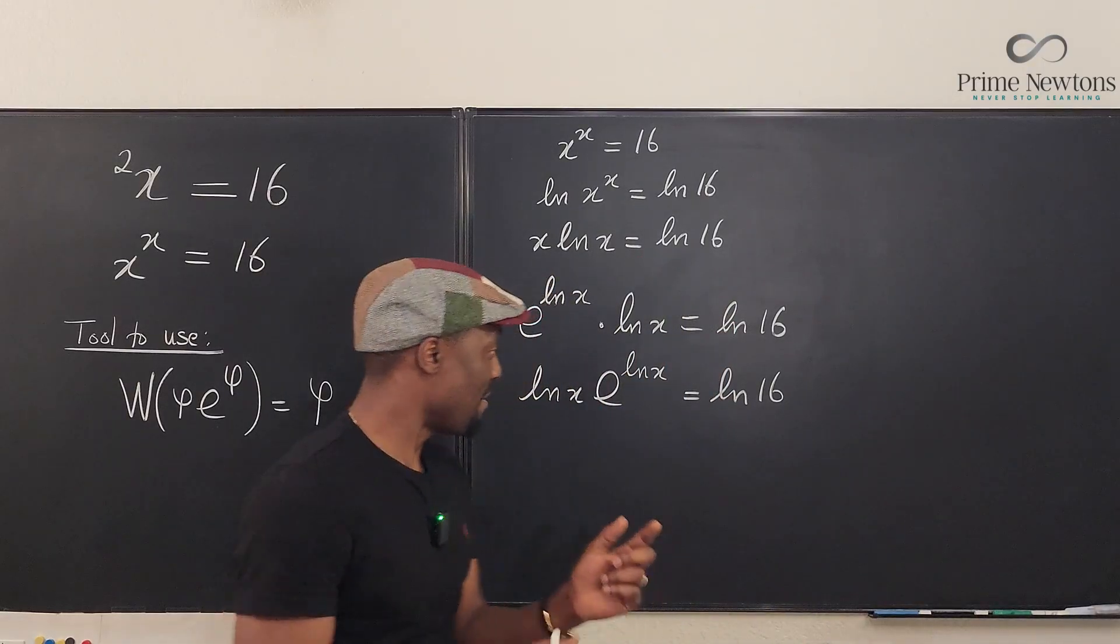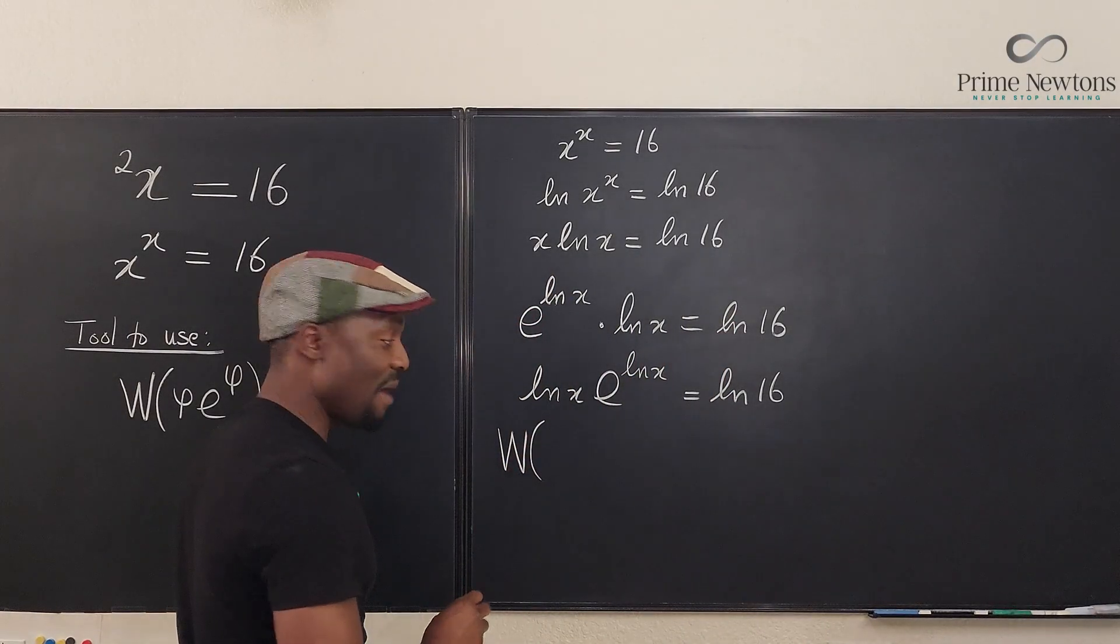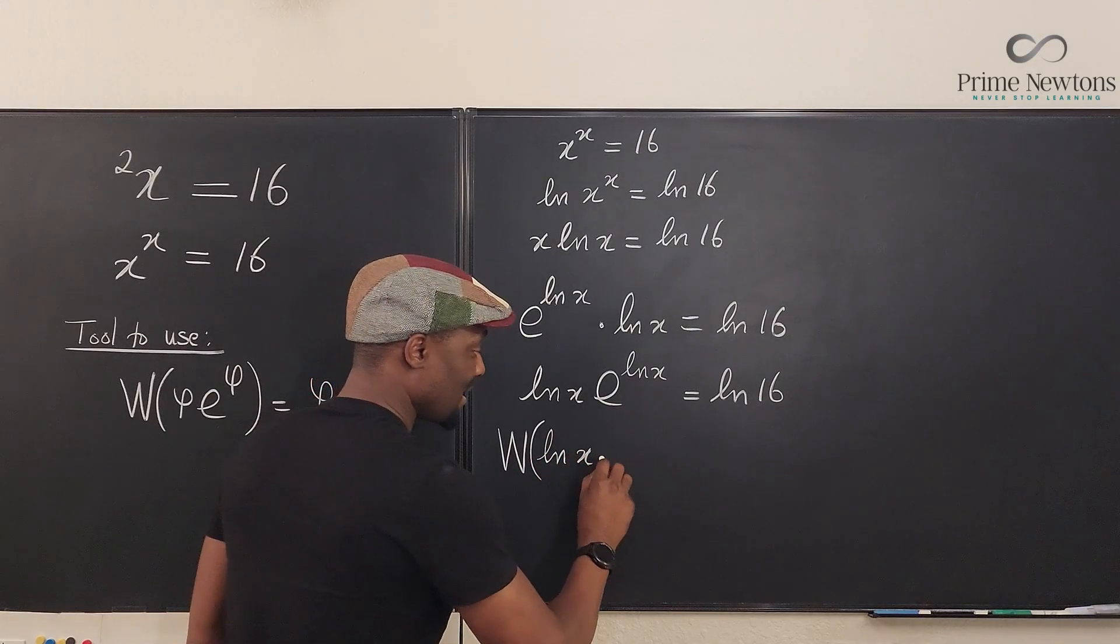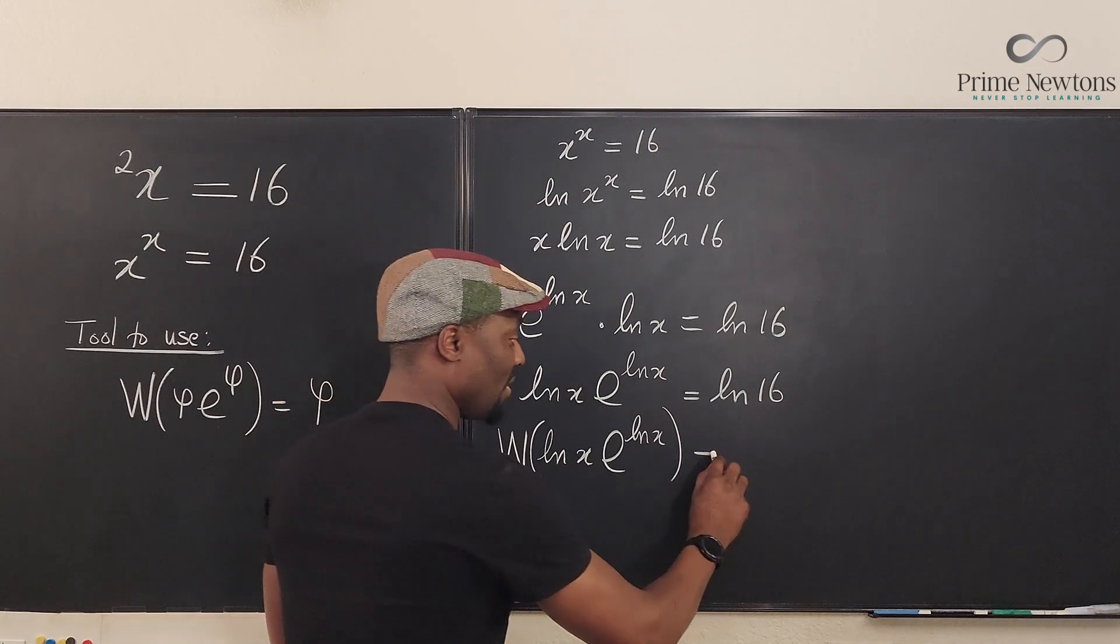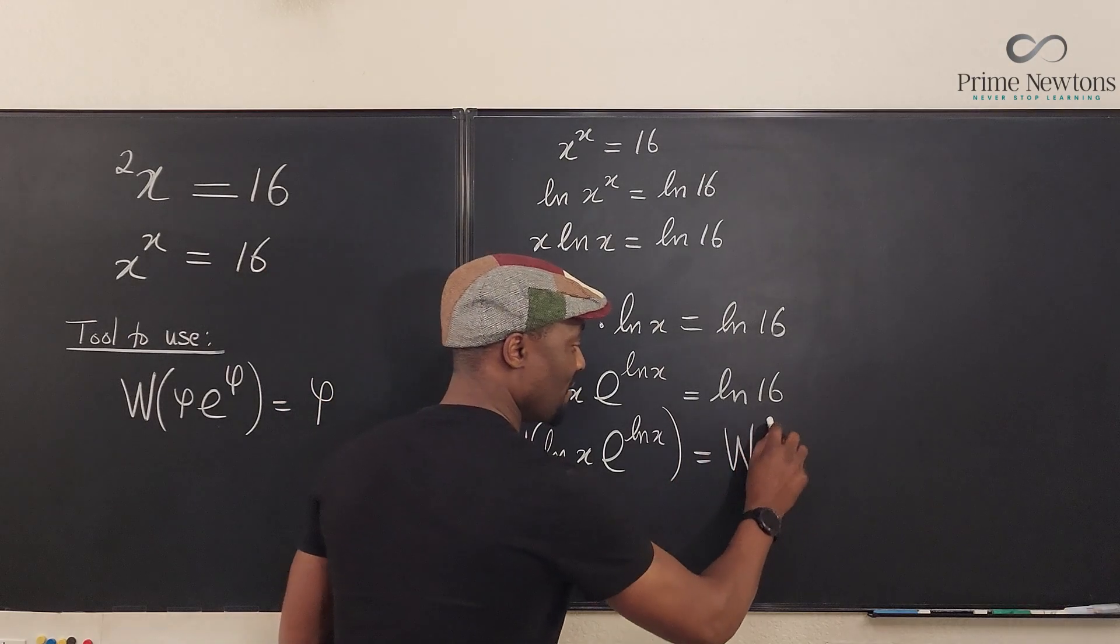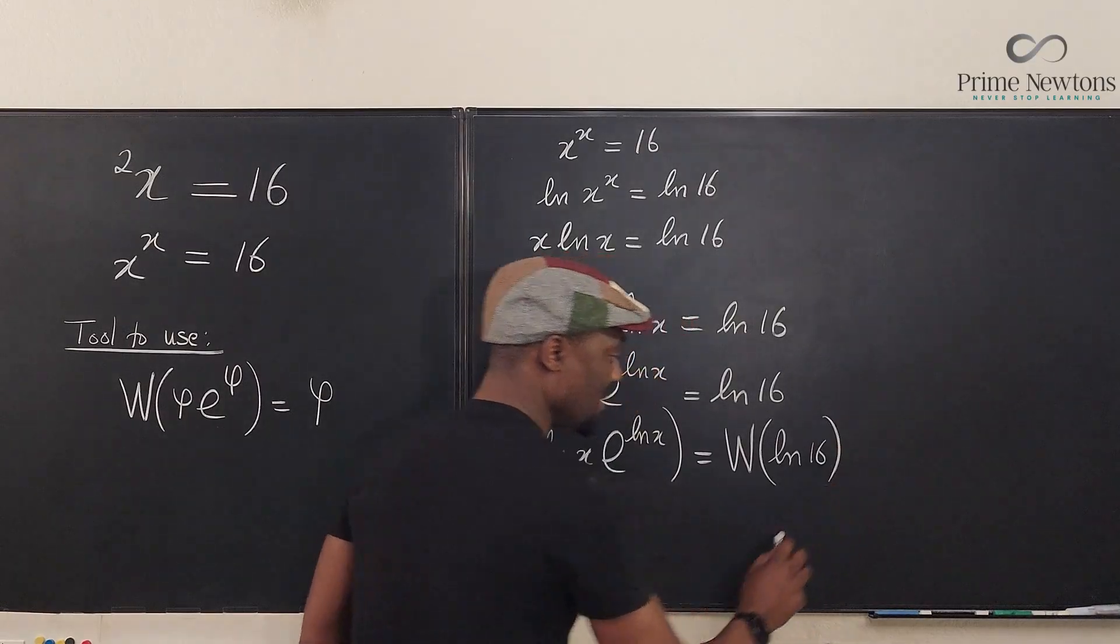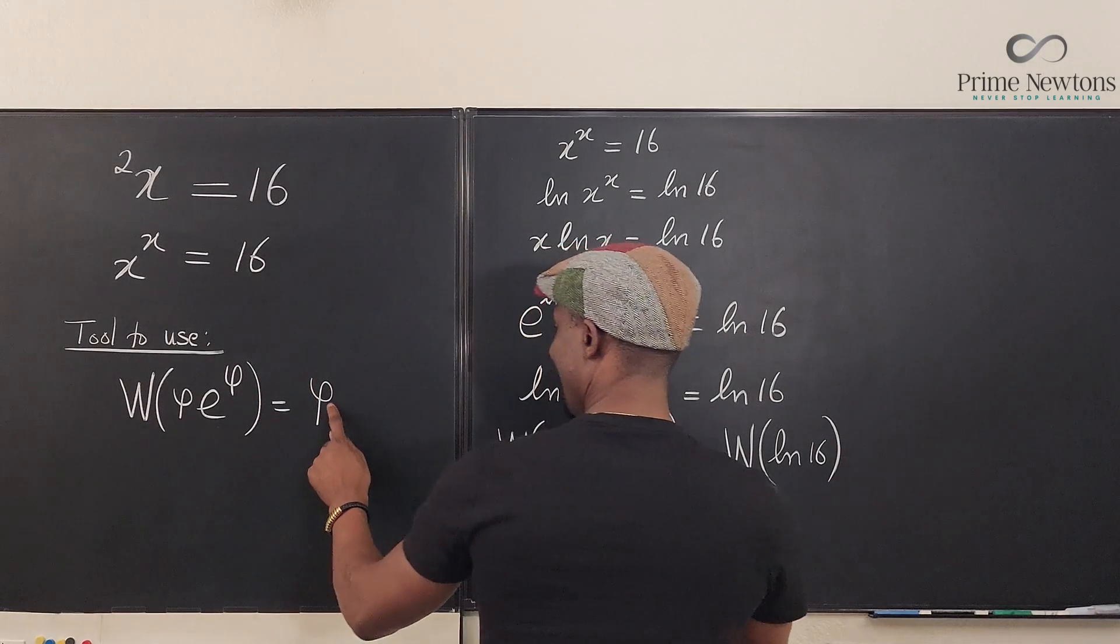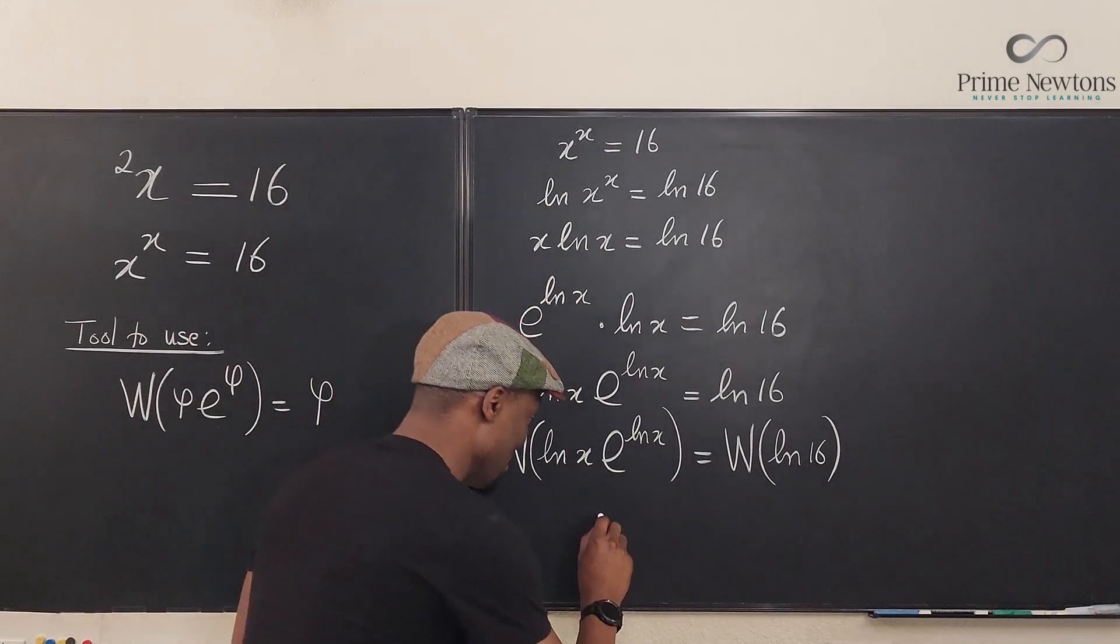Which means if I plug this into the W function, I'm going to plug the right-hand side into the W function. I'm going to get ln of 16 as the argument. What comes out of this? That's what comes out.